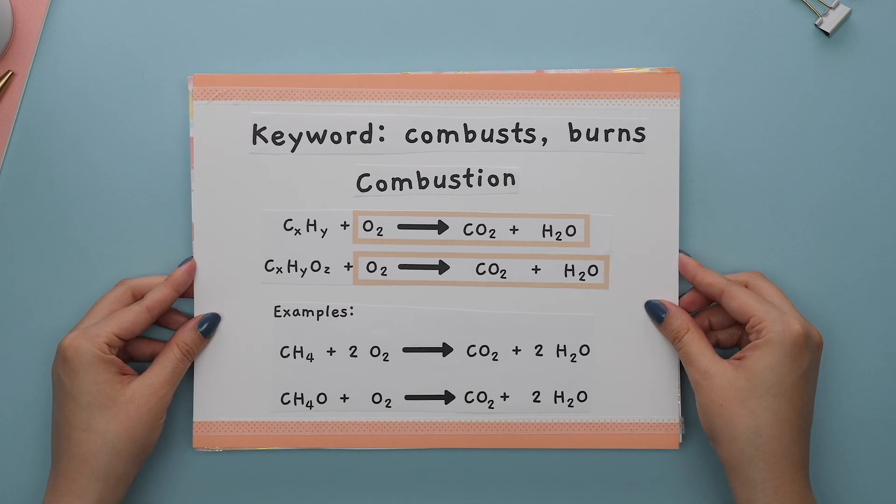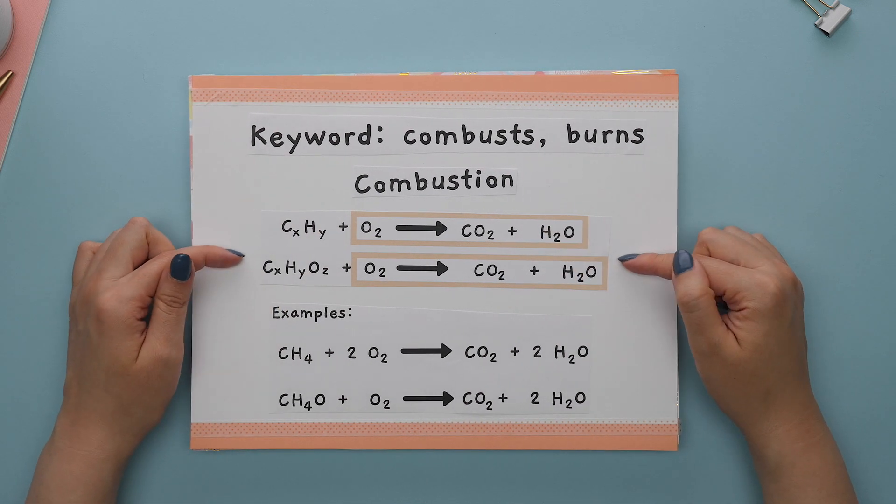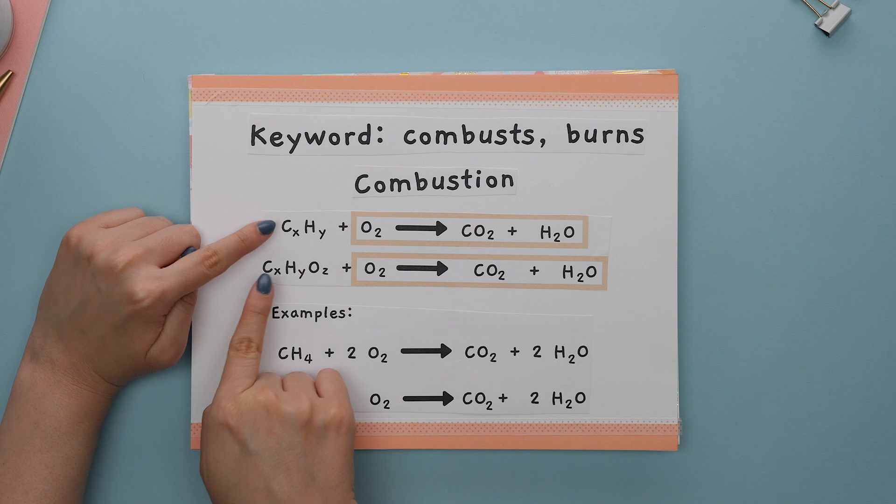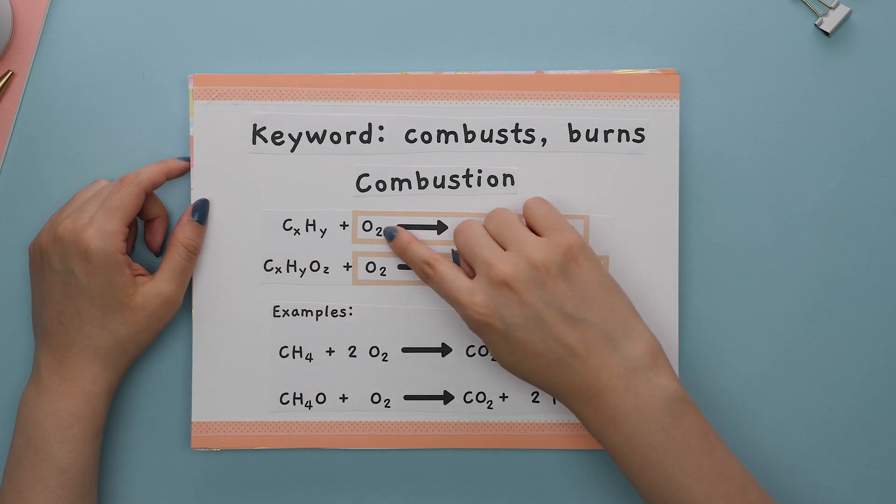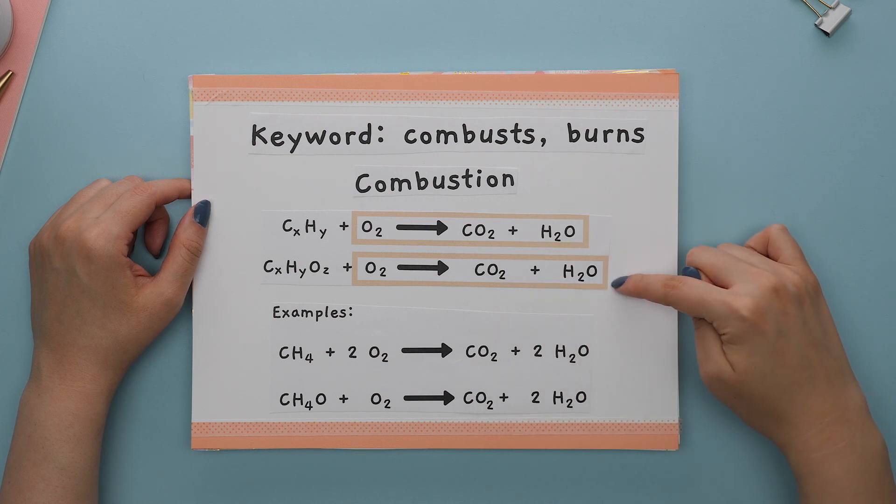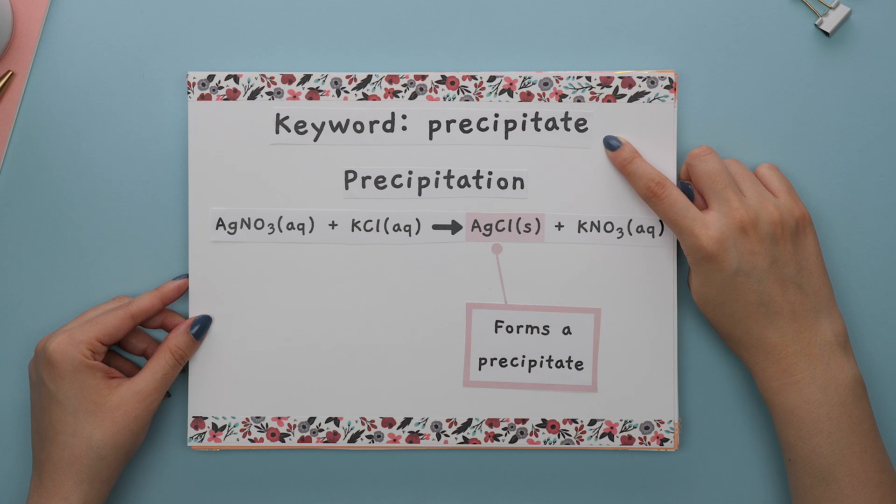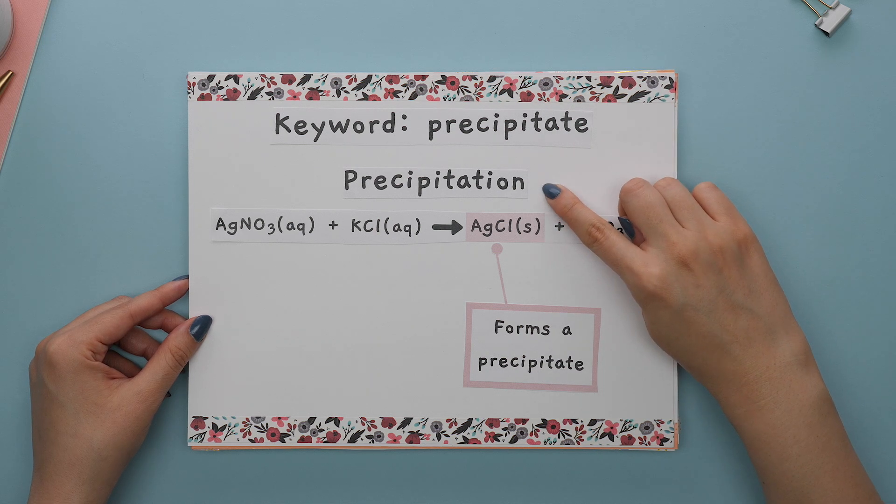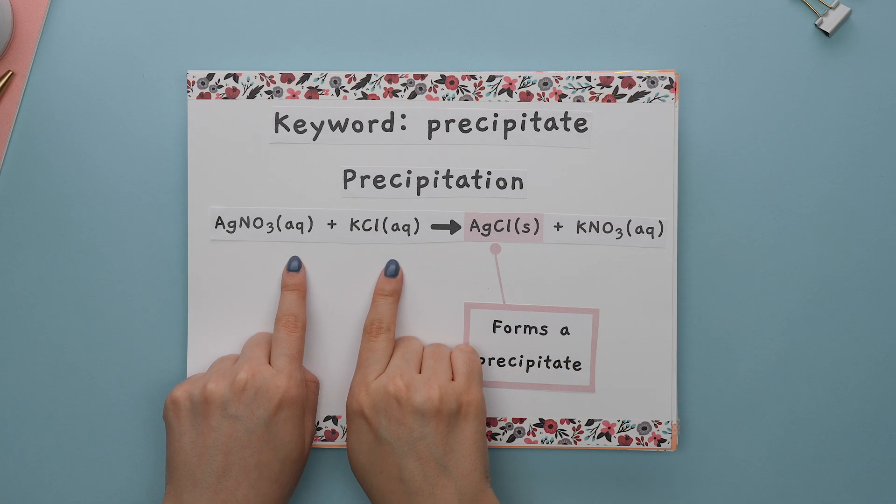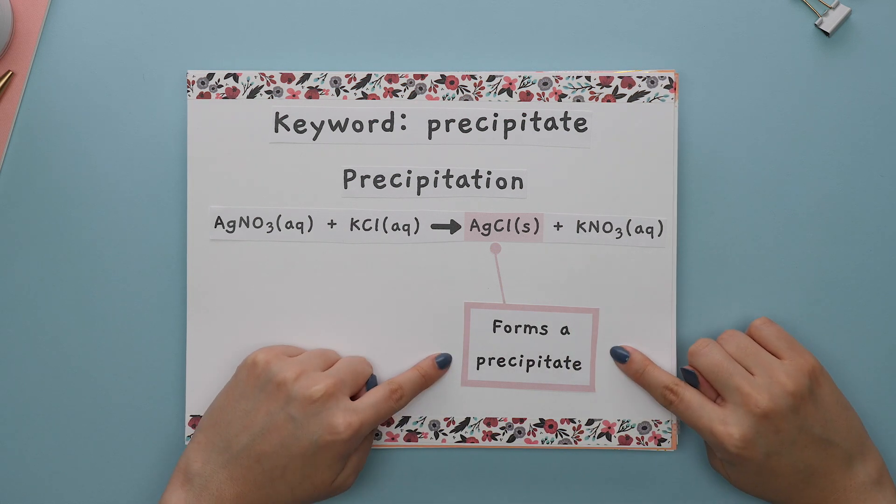Combust, or burns, tells us this is a combustion reaction, which looks like this, where the only thing that changes is this reactant. But the O2 is always your reactant, and your products are always carbon dioxide and water. If you see the keyword of precipitate, then you know it is a precipitation reaction, which looks like this, where your reactants are aqueous and one solid is formed. The solid is your precipitate.